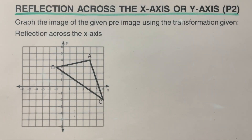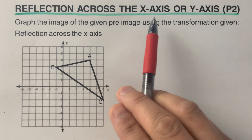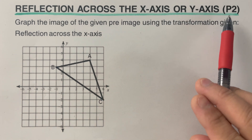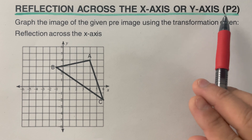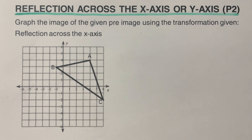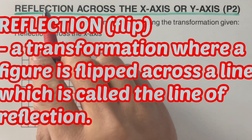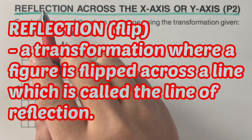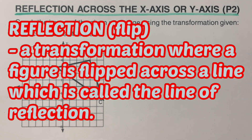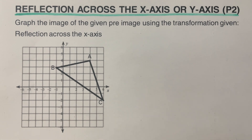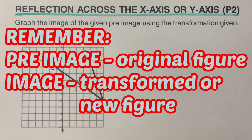Hello everyone. This video will focus on reflection across the x-axis or y-axis, and this is the second part — I will put the link of the first part in the description box below. In this part, the image and the pre-image are overlapping. Before we move on to some examples, let's have a definition for reflection. Reflection is also called a flip. By definition, reflection is a transformation where a figure is flipped across a line called the line of reflection. We also need to remember two terms: pre-image, which means the original picture, and image, which means the new or transformed picture.